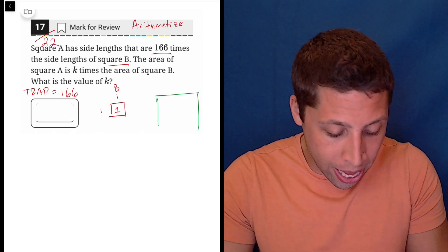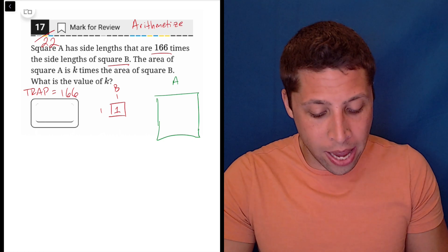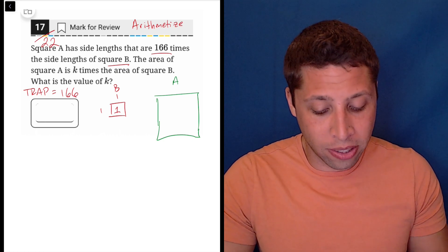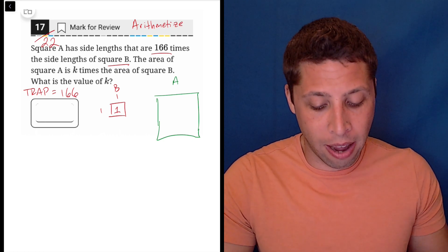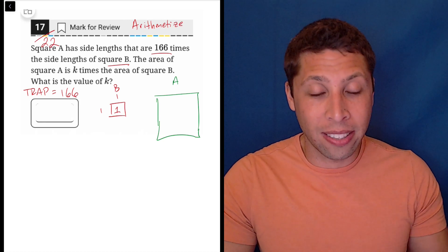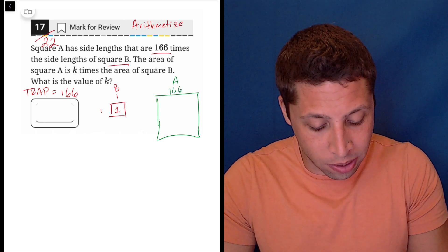Then when we do square A, well square A is going to have a length and a width, or a side length, that is 166 times that. Well, what's 166 times 1? It's 166.